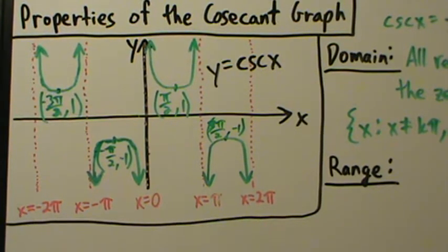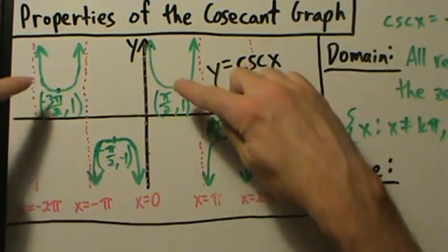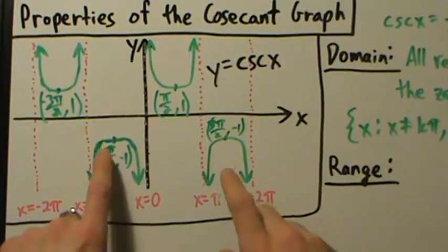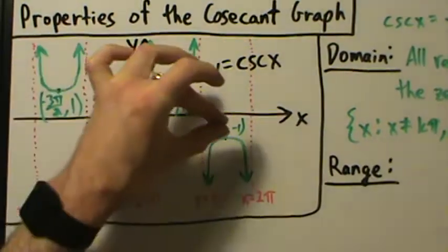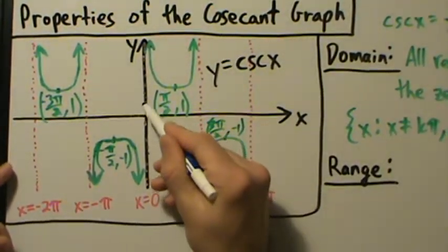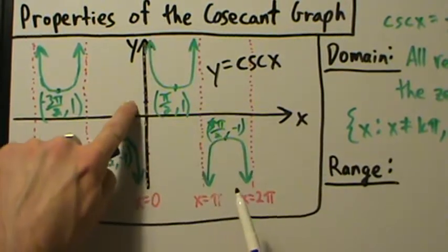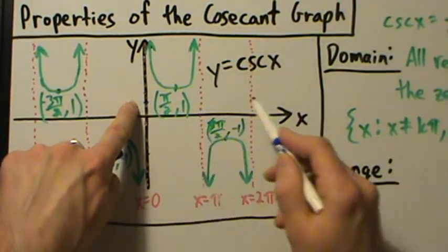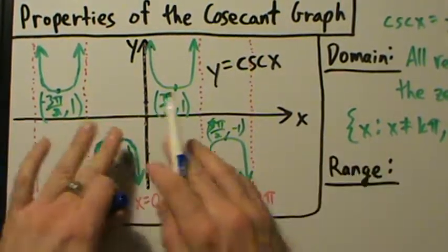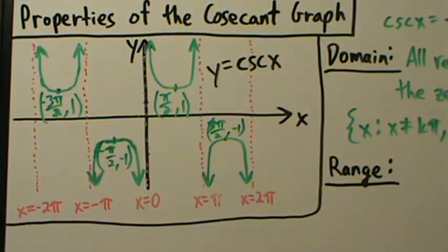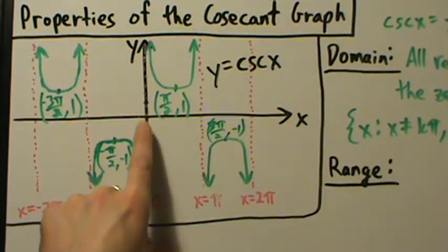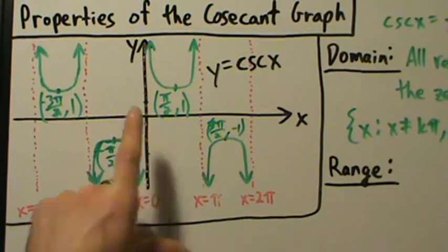So basically, we get all y values that are 1 or greater, and all y values that are negative 1 or below, but we don't get anything in between. For example, if we wanted a y value of 1/2 — that would be right here — looking all the way to the right and all the way to the left, the graph never touches y equals 1/2. So there's no value of x that makes cosecant of x equal to 1/2. The same is true for negative 1/2 and zero.